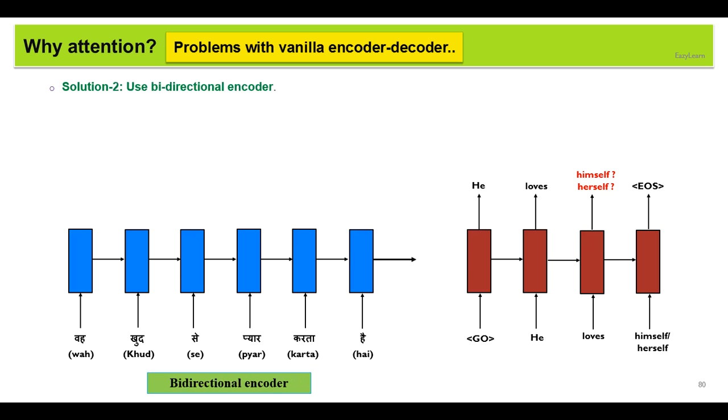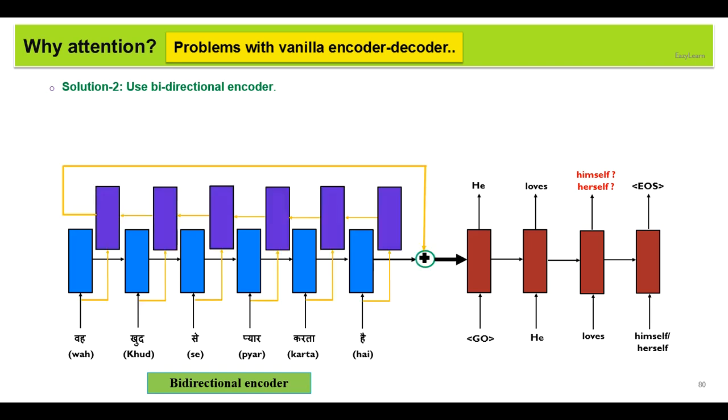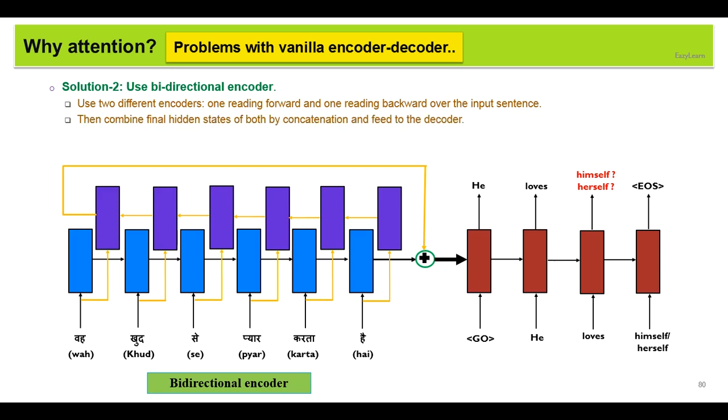Now the second solution: we can use a bidirectional encoder. The idea is one will read the sentence forward, another would read the sentence backward. Finally we can combine the hidden states from both. This is the hidden state from the first decoder, and this is the hidden state from the last second decoder. We can combine them and pass it to the decoder. It's true that it will have more information, but again it doesn't help much in practice.